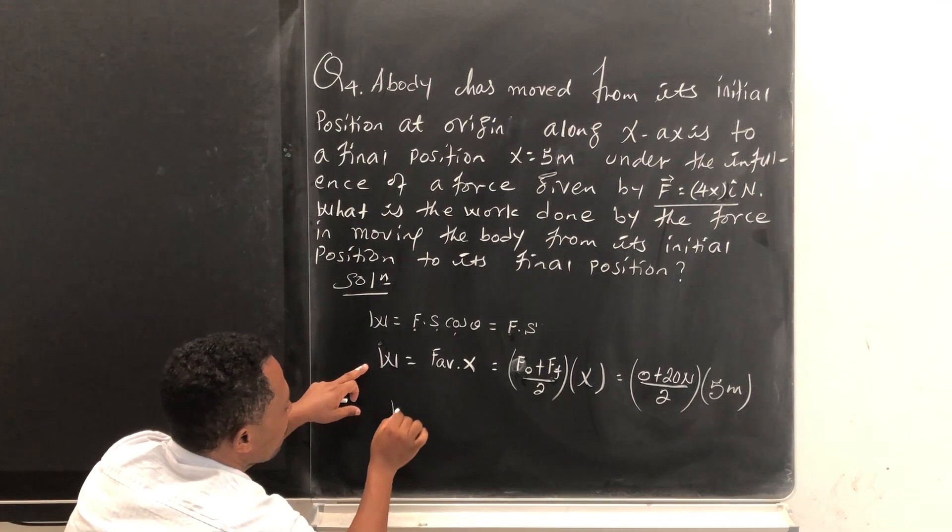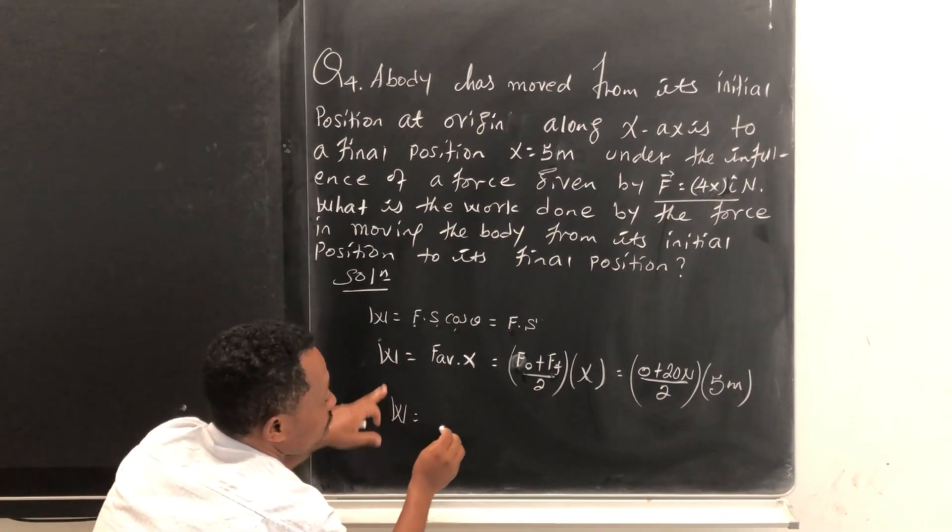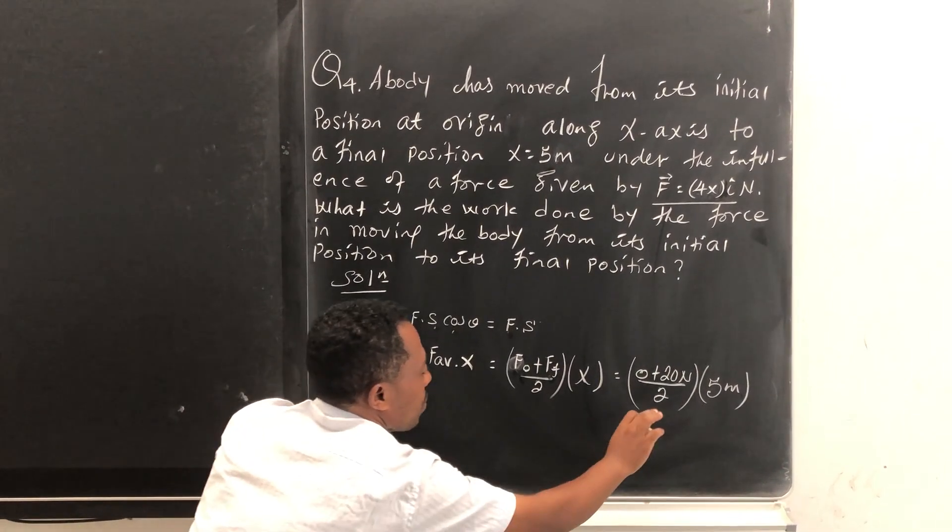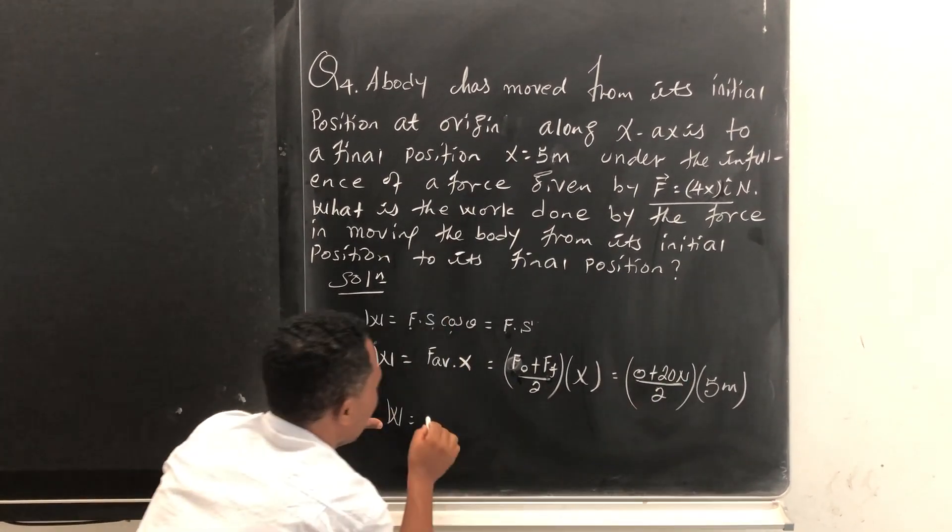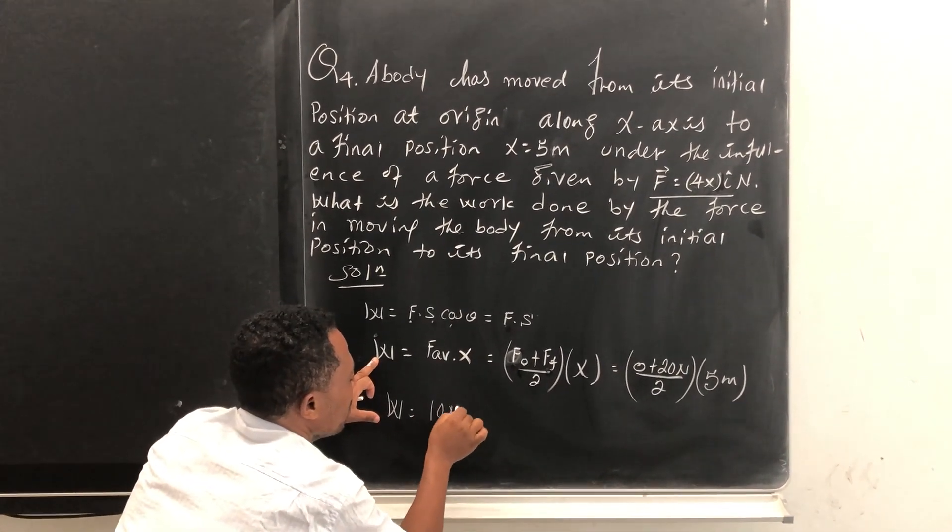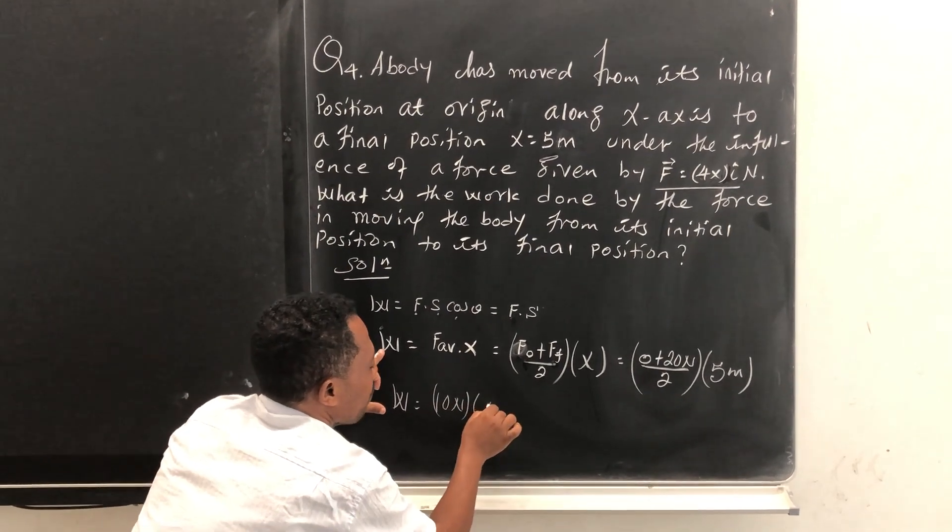This becomes, look, 20 newton over two is 10 newton. Now 10 newton times five meters.